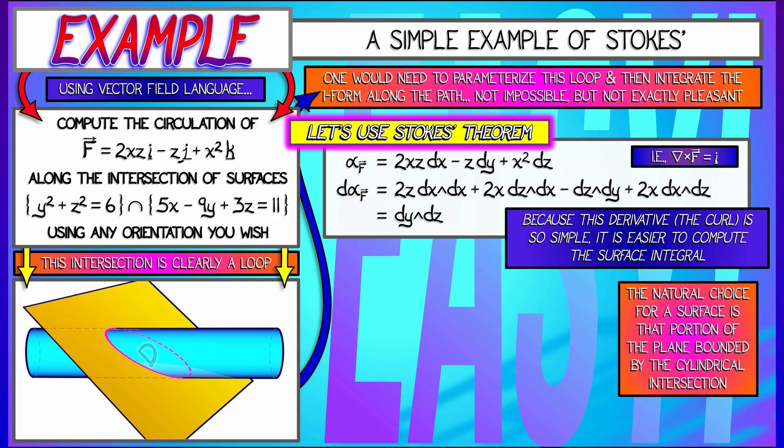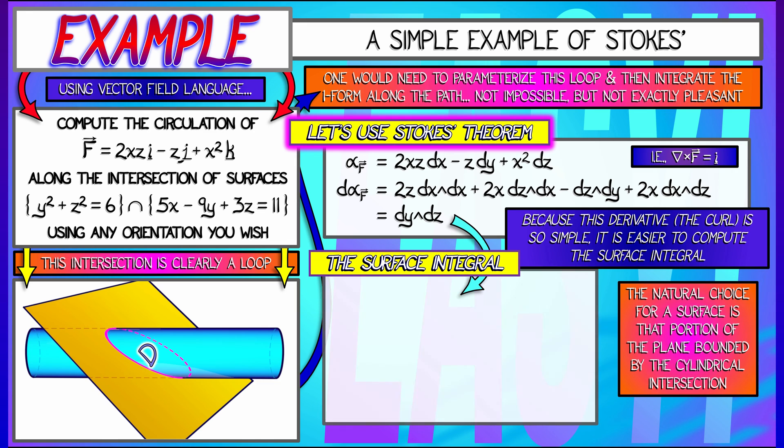So what surface do we use? The natural choice is that flat surface that is given by the intersection of the plane with the interior of that cylinder. So I have this flat elliptical disk. Stokes' theorem says that if I want to compute the circulation, if I want to compute the integral of alpha f over this curve, this boundary of d, then I can integrate d alpha over the interior of d. I'm integrating dy wedge dz. What is that? That is oriented projected area in the yz plane.